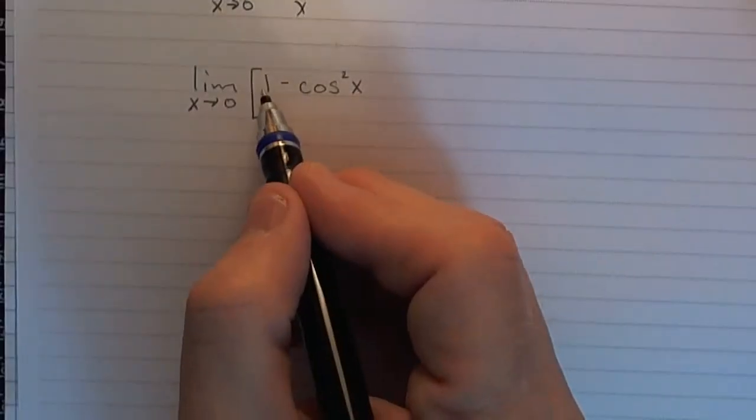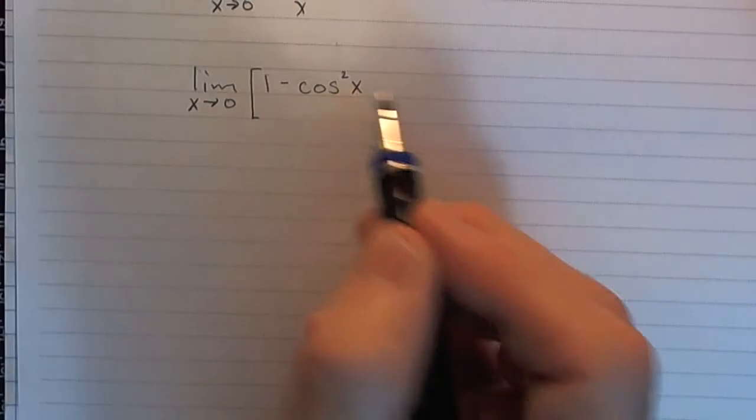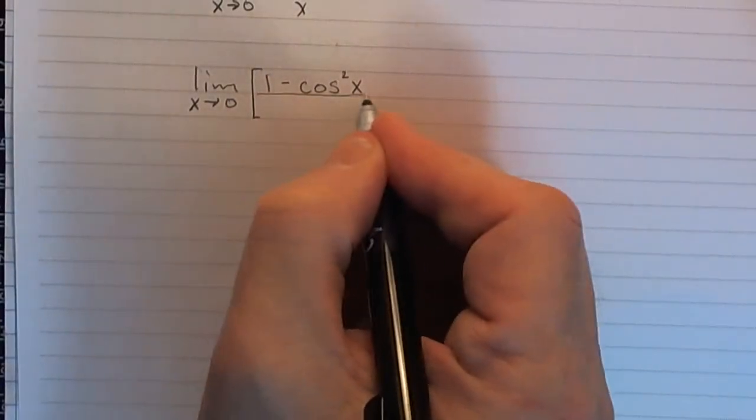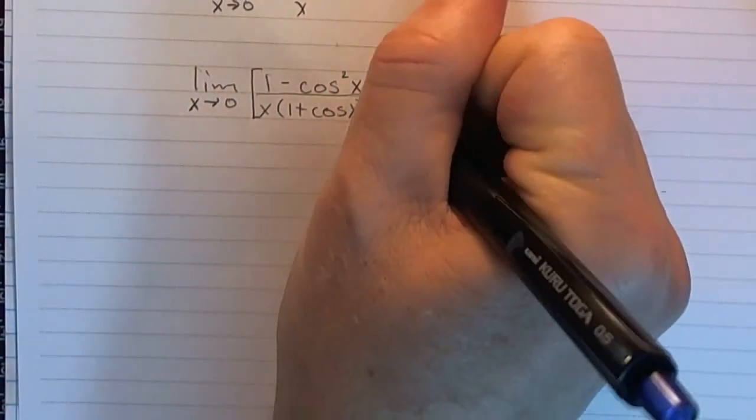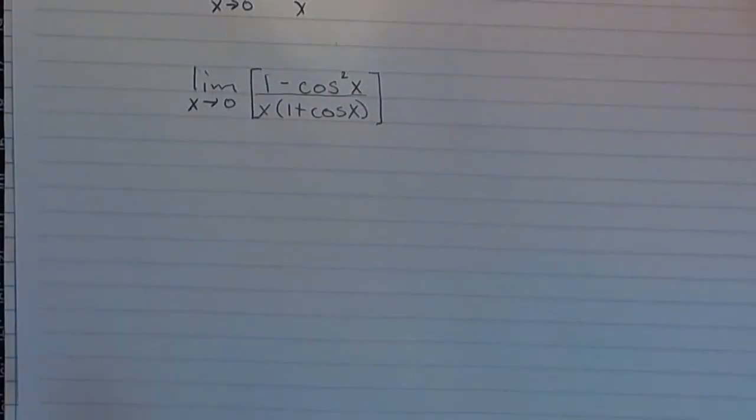Well, that's what we have here. 1 squared minus cosine squared. And then down on the bottom, we of course have x times 1 plus cosine x. Like that.